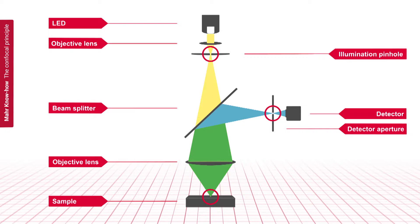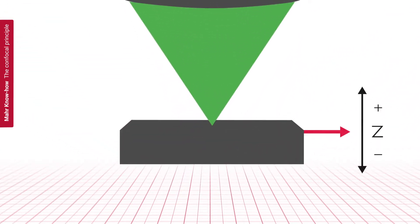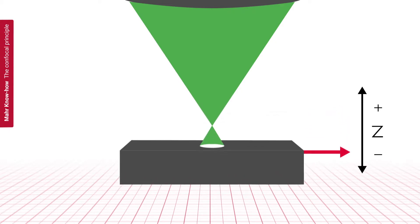Latin origin CON means jointly. This arrangement ensures that light is only reflected back from the surface to the detector if the surface is exactly in focus.